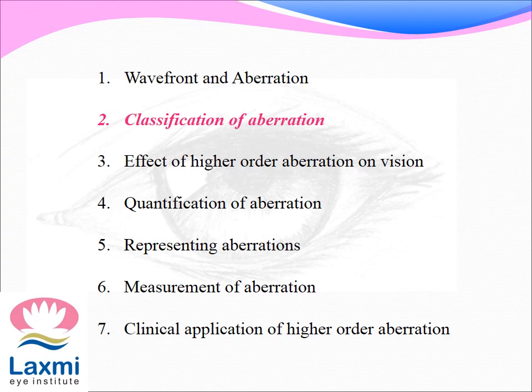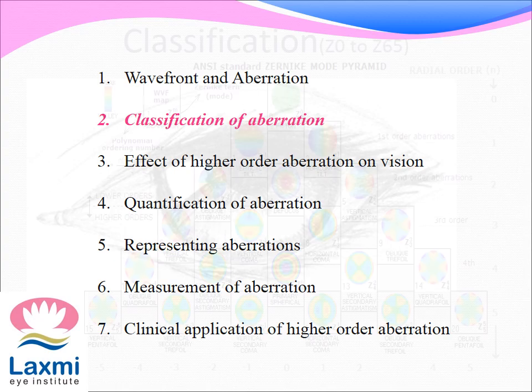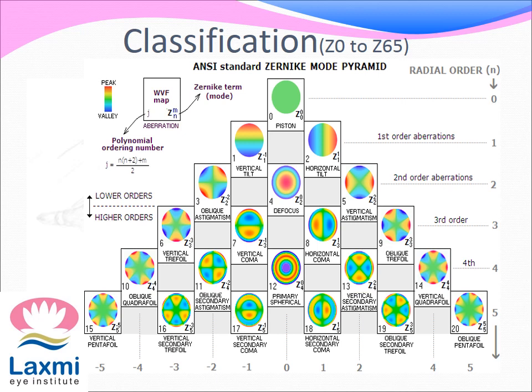Classification of Aberrations. We classify aberrations into two basic orders: lower order and higher order. They could also be classified according to the Zernike polynomial, which is classified from Z0 to Z65. But for clinical purposes, we take only the first twenty.